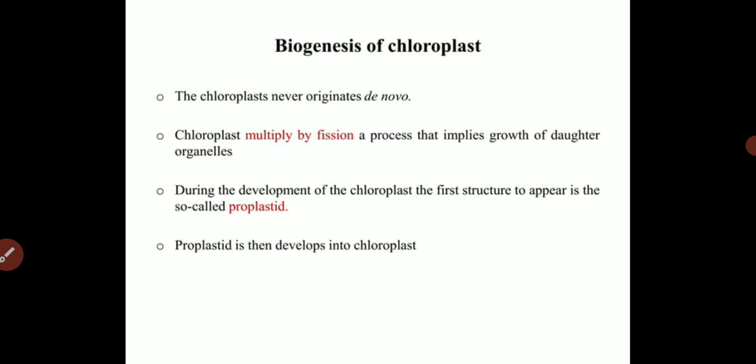Coming to the real topic — biogenesis of chloroplast. The chloroplast never originates de novo, meaning it does not start from scratch by assembling atoms and molecules into an organelle. Instead, chloroplast can only be produced in photosynthetic organisms by the fission process, similar to bacteria. During the development of the chloroplast, the first structure to appear is the protoplastid, as discussed earlier.